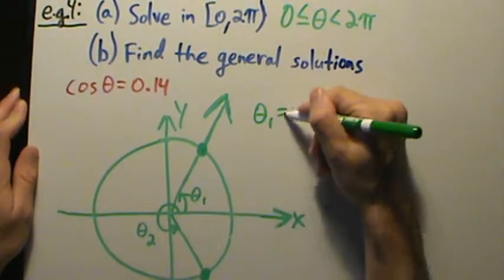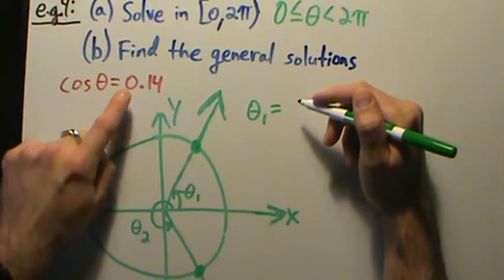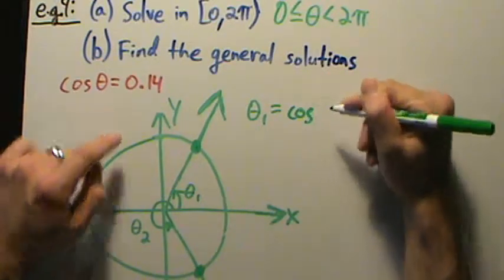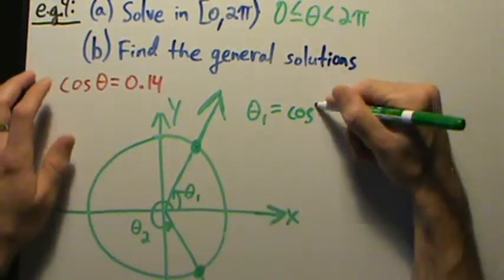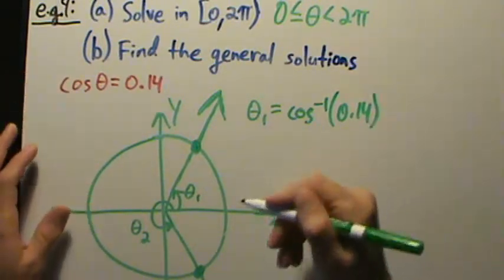Well, theta sub 1, we can just directly take the inverse cosine, okay, because if we take the inverse cosine of something positive, in this case 0.14, then we end up in quadrant 1, which is where we want to be for one of our answers.